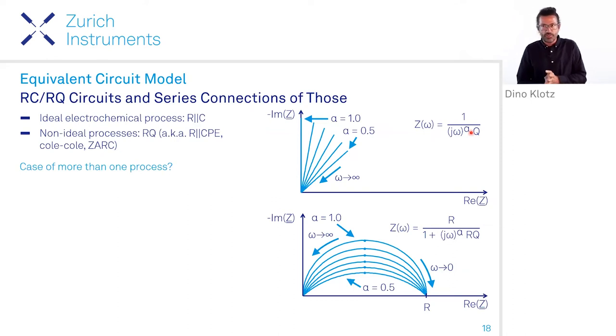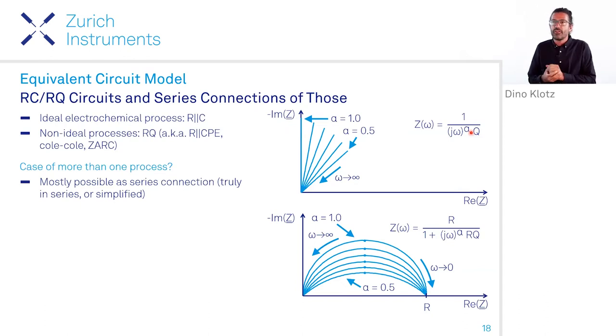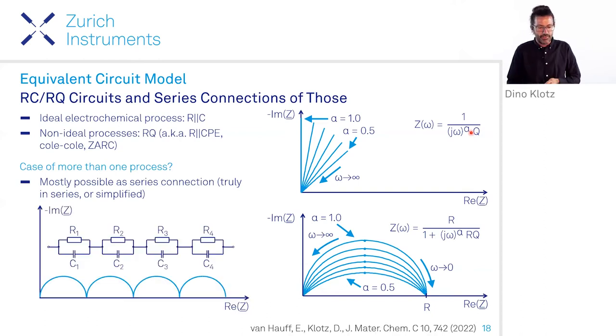Okay, that's nice if we have one process, but what happens if we have more than one process? So mostly in many systems, and that's very nice to look at them, then we have a series connection of our semicircles. In some cases, also, we can simplify it to a series connection. And then it looks like this. And if the time constants are separated enough, then we can distinguish several semicircles that belong to certain processes. What can happen, of course, for example, I said electronic conductivity is usually very fast. It could happen that the maximum frequency of our instrument is already here. So we are not able to measure this fastest, this most high frequency semicircle, and we end up with this series resistance.